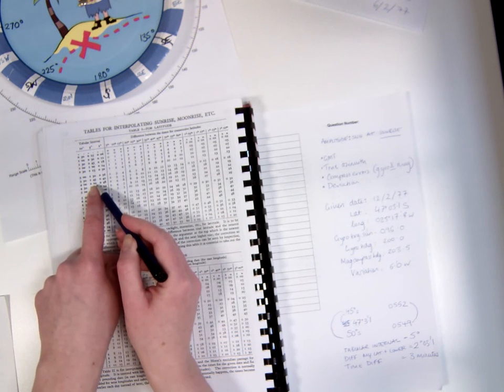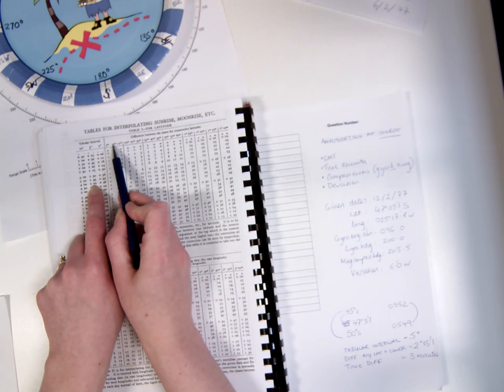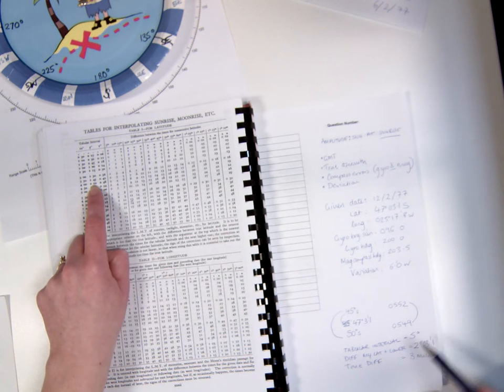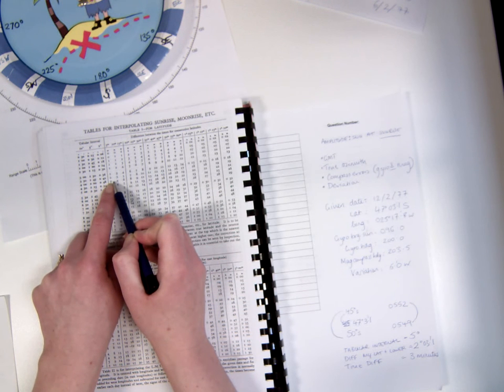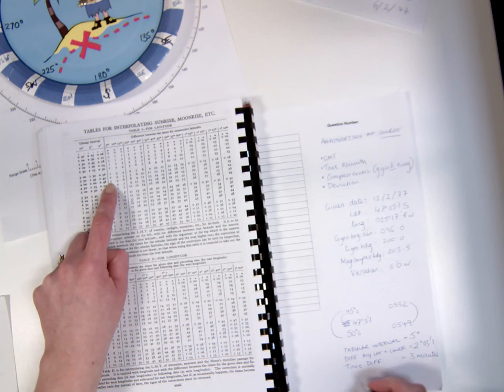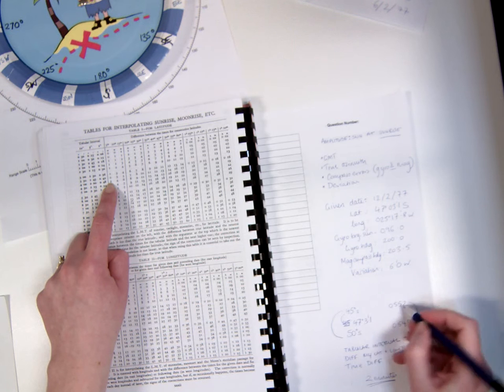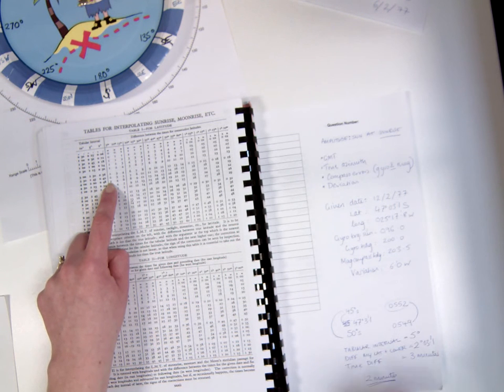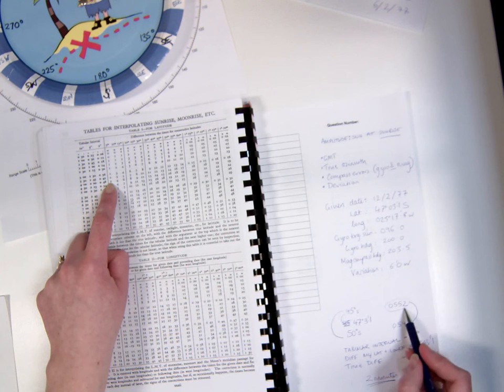We're going to read across then until we're under the number of minutes that's closest to our time difference. Our time difference here is 3 minutes, so that's closest to 5. I'm just going to read along this row until I've got the time difference at 5 minutes, and that's 2. So my time difference, you might see this referred to as the increment, is 2 minutes. I'm going to apply that 2 minute difference to the time for the lower latitude. At 50 degrees south, the time of sunrise is actually earlier than the LMT at 45 degrees south, so I'm going to be subtracting that 2 minutes.